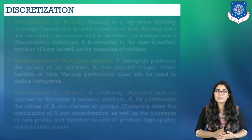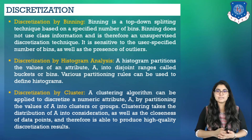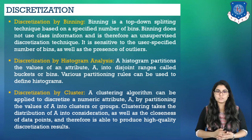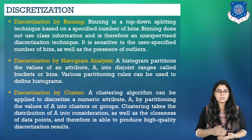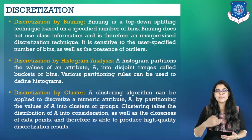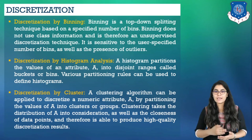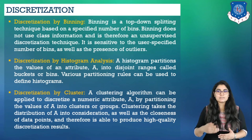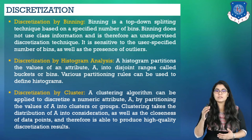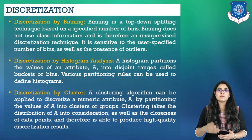Discretization by binning is a top-down splitting technique based on a specified number of bins. We previously discussed binning methods for data smoothing; these methods are also used as discretization methods for data reduction and concept hierarchy generation. Attribute values can be discretized by applying equal-width or equal-frequency binning and then replacing each bin value by the bin mean or median, as in smoothing by bin means or smoothing by bin medians respectively. This technique can be applied recursively to generate concept hierarchies. Binning does not use class information and is therefore an unsupervised discretization technique. It is sensitive to the user-specified number of bins as well as the presence of outliers.